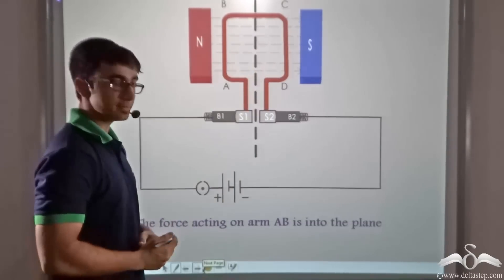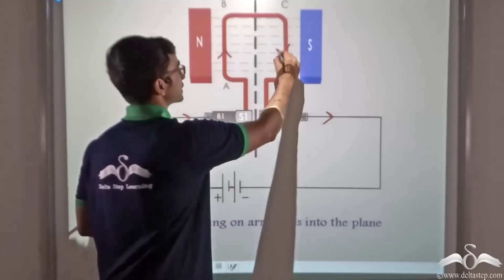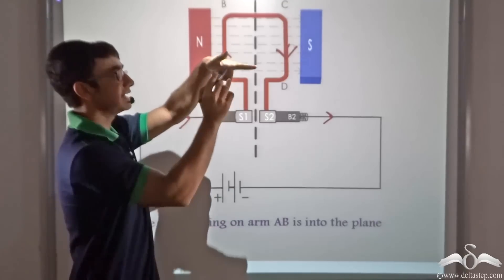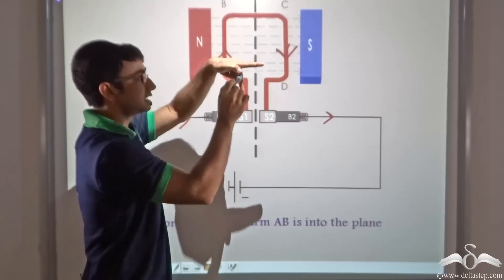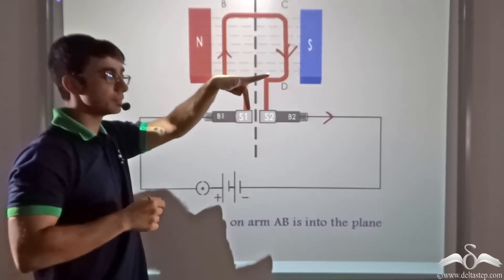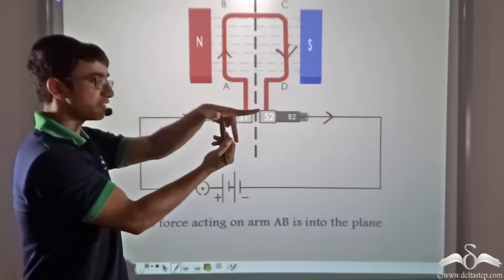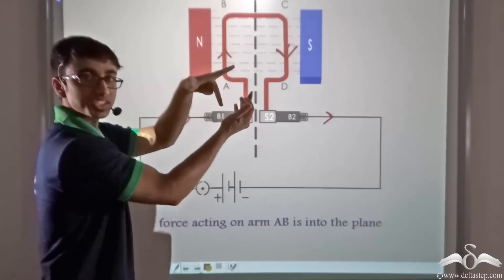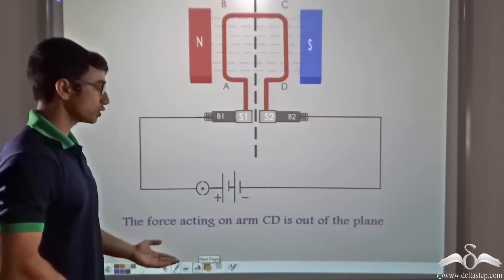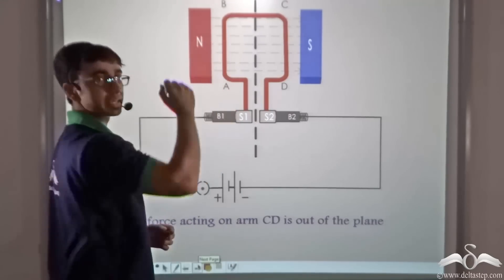Now let us consider arm CD. In arm CD current is flowing in the downward direction. Again my index finger points in the direction of the magnetic field, and my middle finger pointing in the direction of current points downwards. If I stretch out my thumb perpendicular to both my middle finger and index finger, I find that the force acting on CD is out of the plane of the screen. Thus the force on arm CD is out of the plane whereas the force on AB is into the plane.